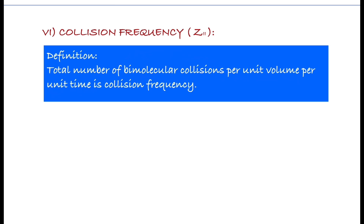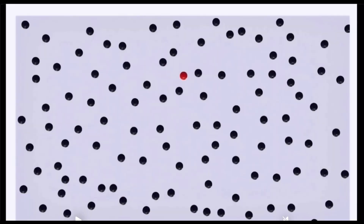In unit time and unit volume of gas, the total number of bimolecular collisions taking place is called collision frequency Z11. In the assumptions, we discussed that only bimolecular collisions are considered. Now you can see the difference: collision number focuses on one molecule shown here in red color.